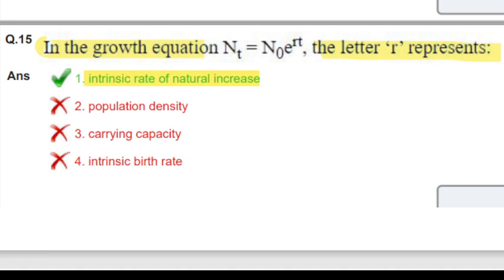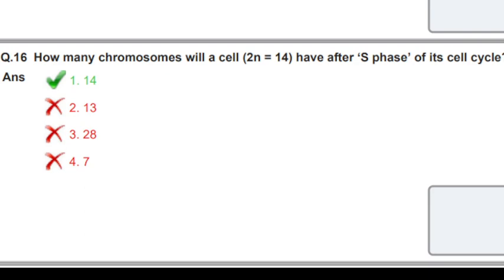Next interesting question: how many chromosomes will a cell with 2n = 14 have after S phase of its cell cycle?